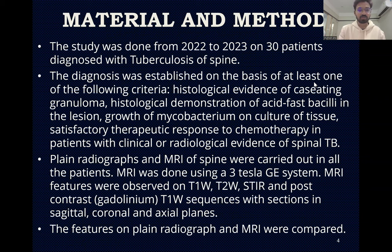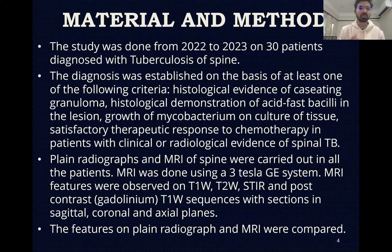Materials and methods: The study was conducted from 2022 to 2023 in 30 patients diagnosed with tuberculosis of the spine. Diagnosis was established on the basis of at least one of the following criteria: histological evidence of caseating granuloma, histological demonstration of acid-fast bacilli in the lesion, growth of Mycobacterium on culture of tissue, or satisfactory therapeutic response to chemotherapy in patients with clinical or radiological evidence of spinal TB.